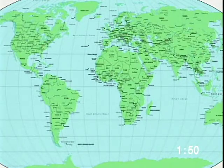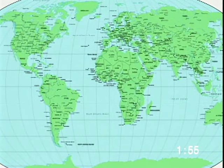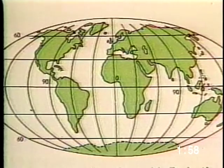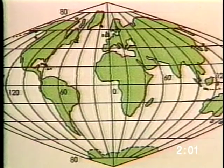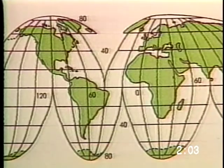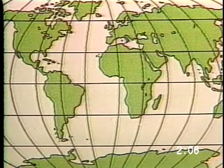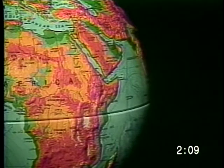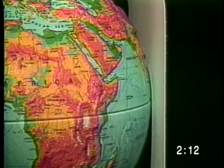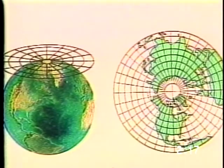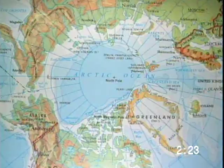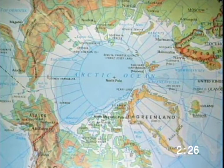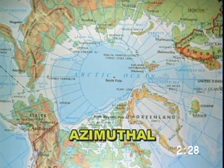Cartographers have avoided as much distortion as possible by creating different types of map projections. A map projection is a method by which the Earth's curved surface is represented on a flat surface map. One type is made by projecting the surface of the Earth on a plain or flat piece of paper. The paper touches a globe at only one point, and areas near that point show little distortion. A polar map is just such a map. The technical name for this is an azimuthal projection.